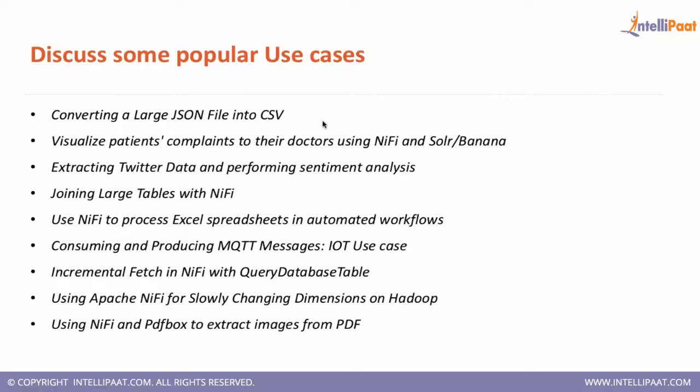We also want to evaluate that the JSONs are proper or not. There is a JSON checker, so we'll use an Evaluate JSON Path processor. After that, if we want to change any attribute, we can change the attribute. Then with Convert JSON to CSV — there is a processor which does that — and then we'll put the file either in HDFS or wherever required.